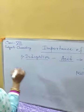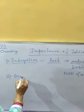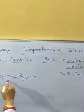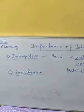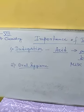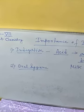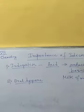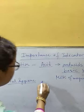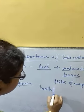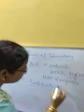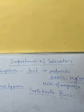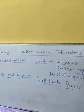Next, number two — that is oral hygiene. Acid may also be produced in our mouth because of the food we eat, and there are some bacteria which produce acid in our mouth. To neutralize the acid produced in our mouth, we use toothpaste. We use toothpaste which is basic in nature. So by brushing with toothpaste we are actually neutralizing the acid produced in our mouth.